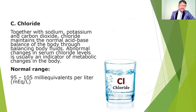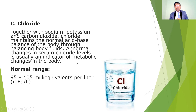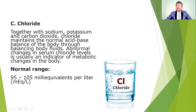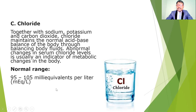Chloride, together with sodium, potassium, and carbon dioxide, maintains the normal acid balance of the body through balancing body fluid. Abnormal changes in serum chloride levels are usually indicators of metabolic changes in the body. The normal range is 95 to 105 mEq/L; increases or decreases can alter acid-base balance.